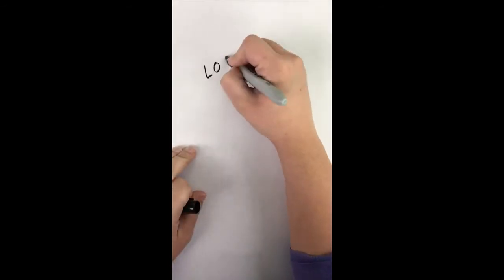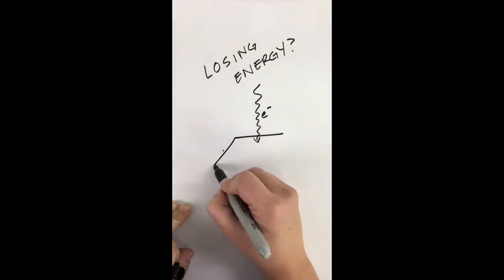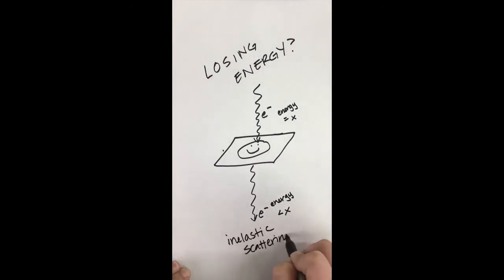Electrons from the beam interact with the sample when they hit it, and then move through the sample. These electrons in the incident beam have an energy of x and they may have an energy of less than x upon leaving the sample. This could be due to inelastic scattering.